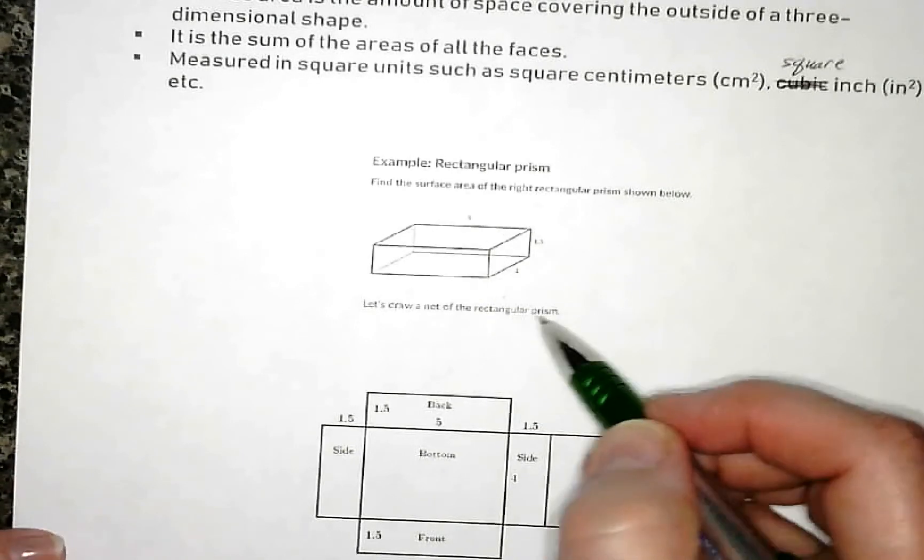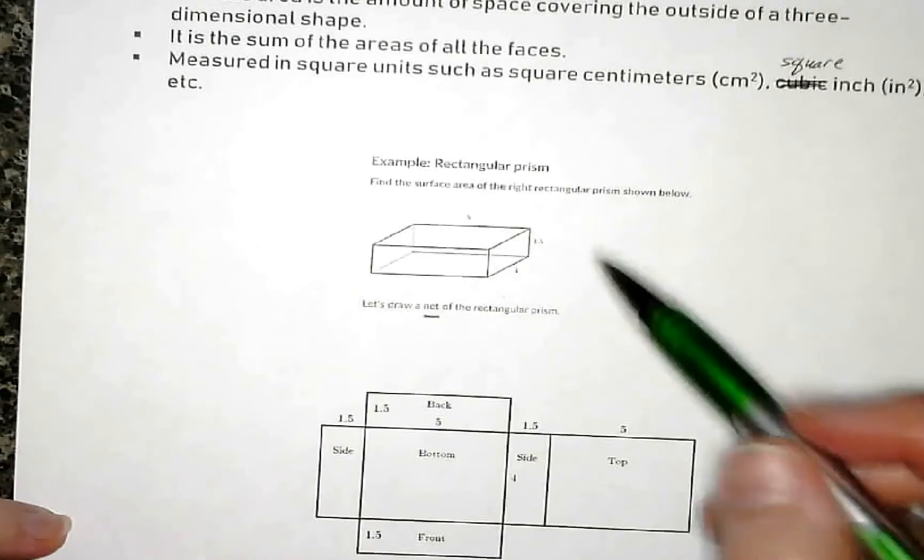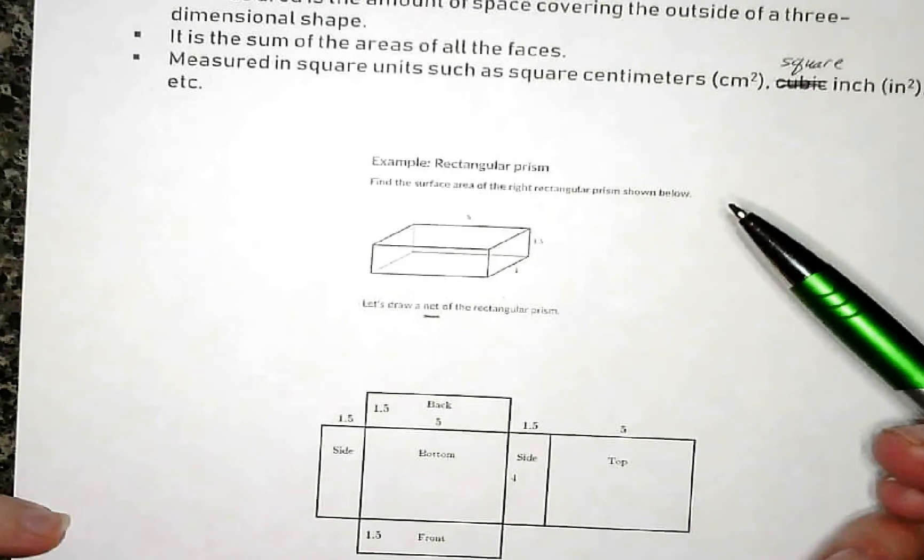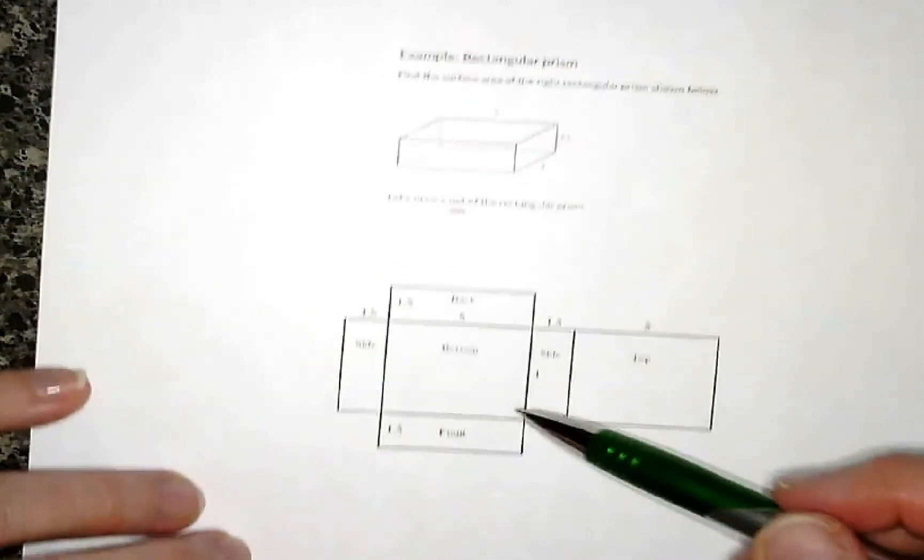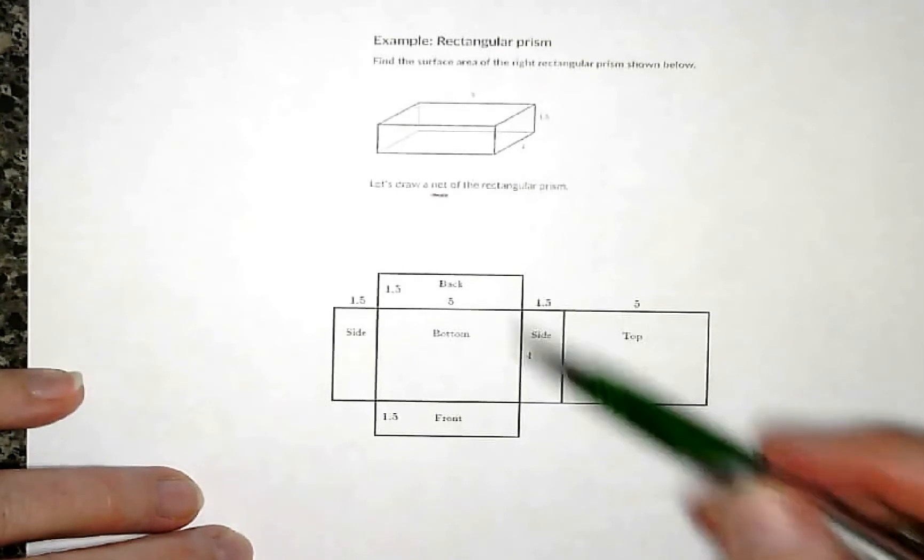So if we draw what's called the net. A net would be if I would take a cardboard box and I would cut the edge so that it could all lay flat, it would look something like this. This is called a net.